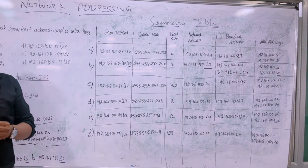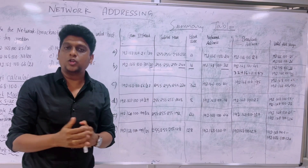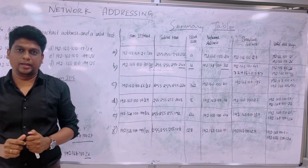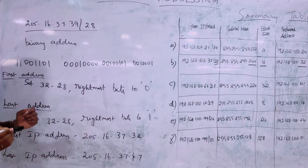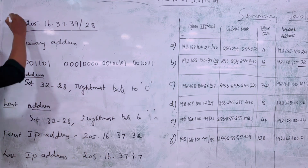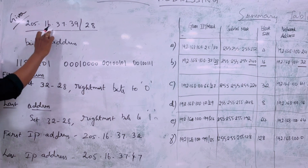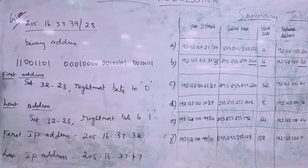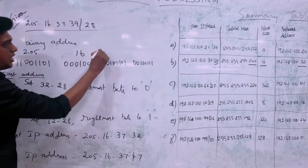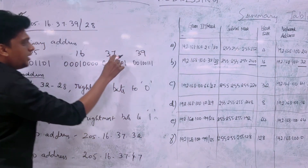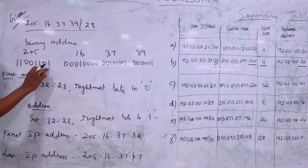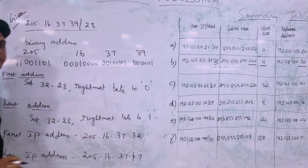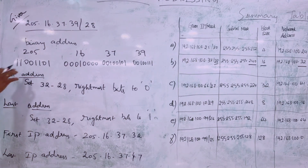To identify the first and last IP address of a network using binary, the given IP address is 205.16.37.39/28. The slash 28 represents the CIDR subnet mask. We first represent the IP in binary form: 205, 16, 37, and 39 are each converted to their binary representations.